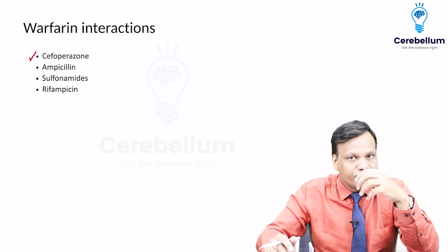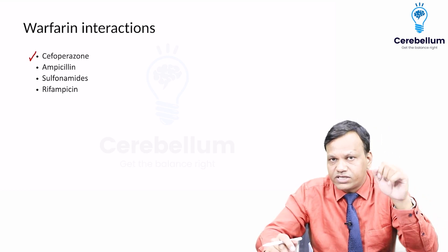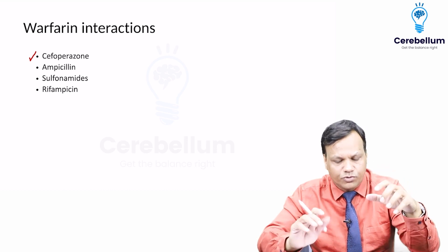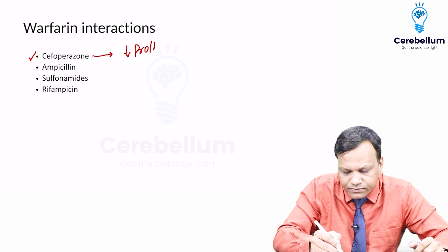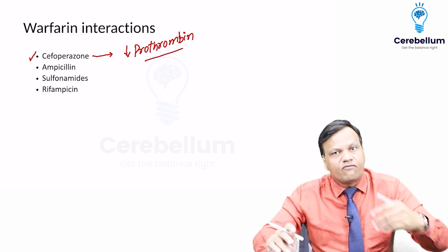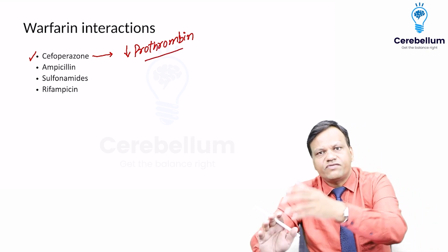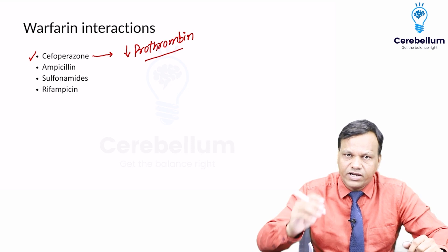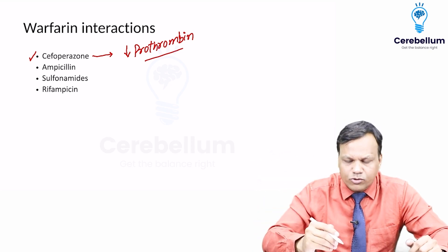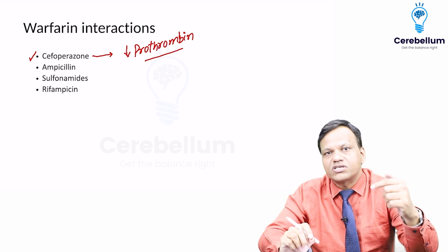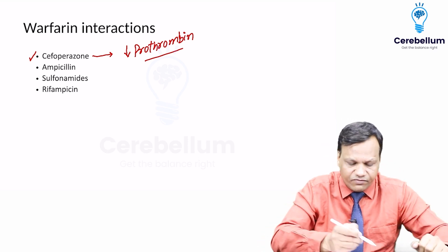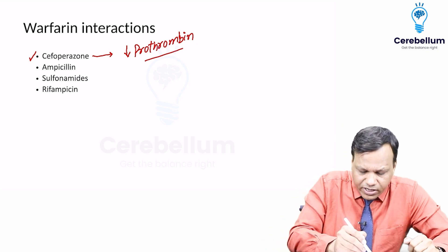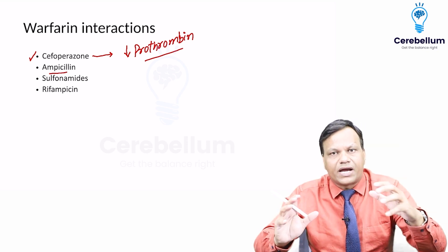First is the interaction with cefoperazone, which is a cephalosporin that has a side effect of causing hypoprothrombinemia. Some cephalosporins cause hypoprothrombinemia, and warfarin also acts by decreasing the function of prothrombin — it inhibits the activation of factors 2, 7, 9, and 10. So if prothrombin is already low, the same dose of warfarin can cause bleeding when given with cefoperazone.